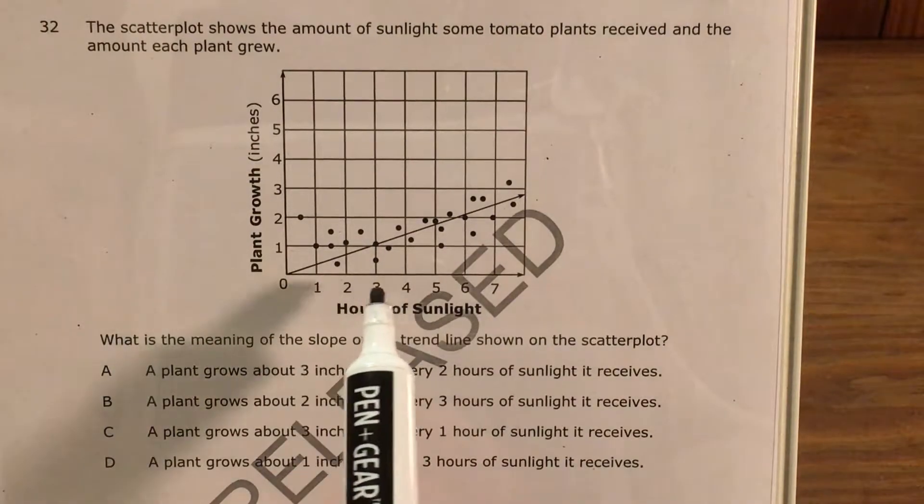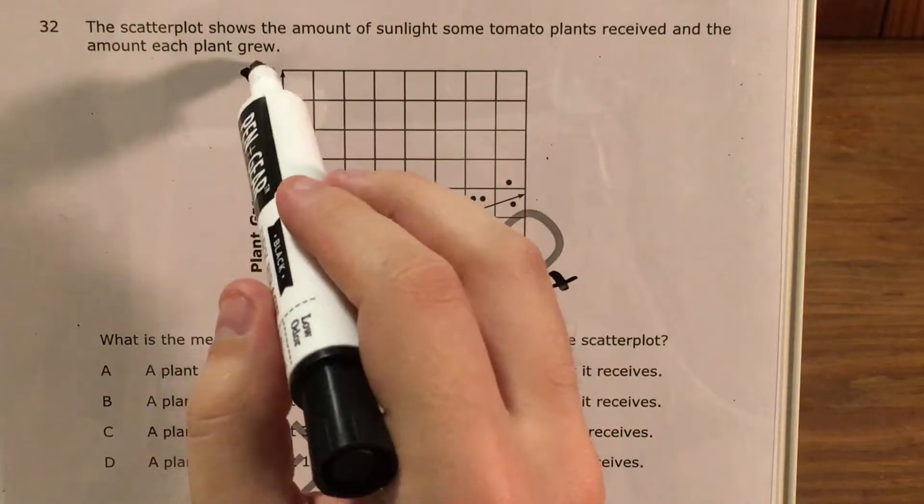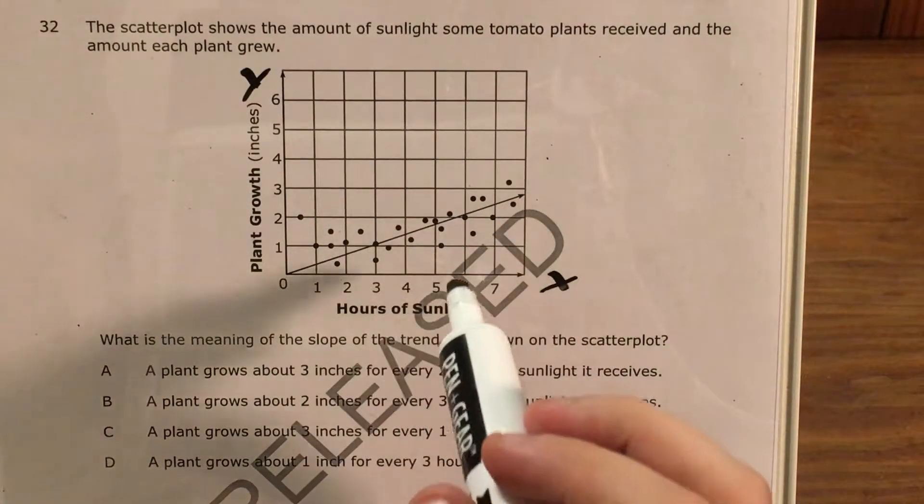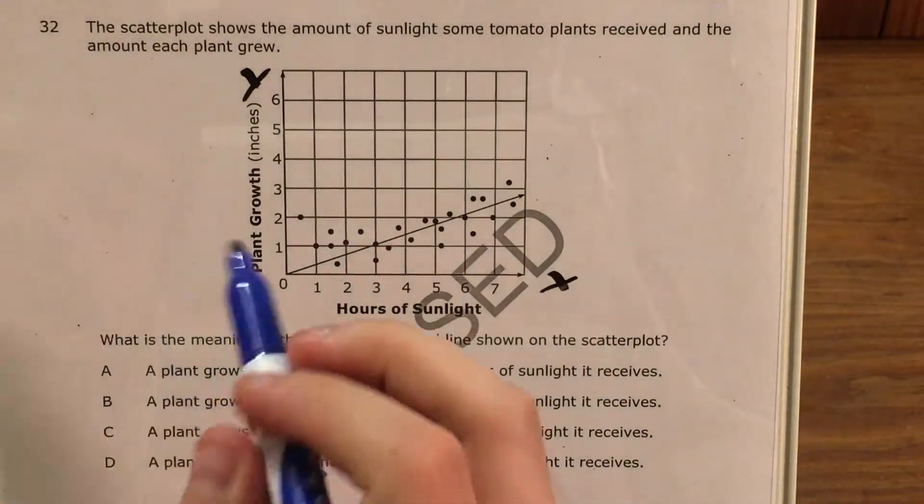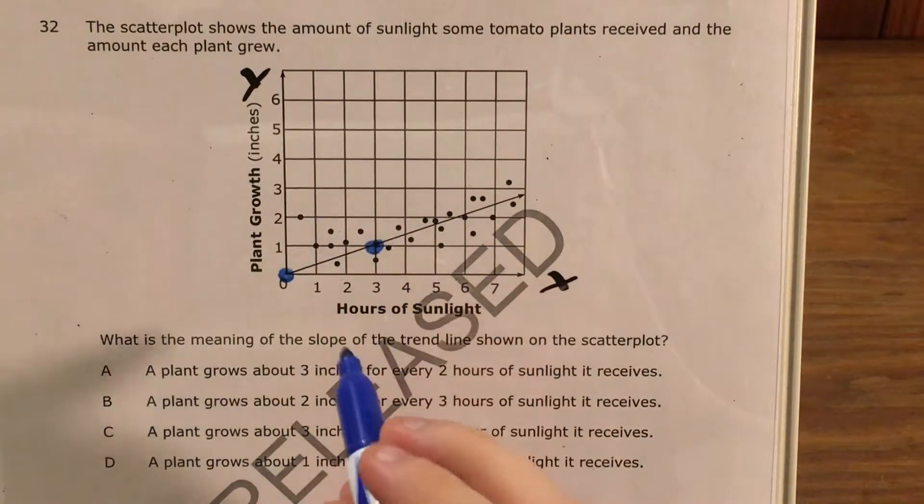Now the question does label the axes of this graph. The x-axis is how much sunlight the plant got. The y-axis is how much the plant grew. So as I look at my scatter, or as I look at my line of best fit, I see that it starts down here and kind of hits this point here.